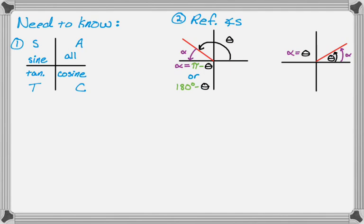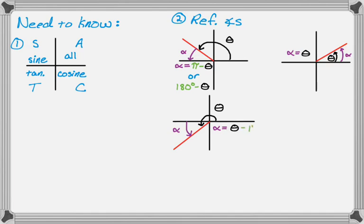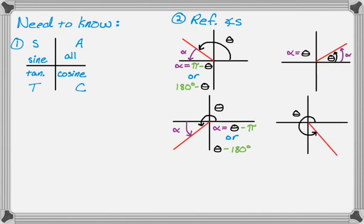In the third quadrant, theta goes all the way from the positive x-axis, and the reference angle alpha is calculated as theta minus pi, or theta minus 180 degrees. In the fourth quadrant, alpha is calculated as 2 pi minus theta, or 360 degrees minus theta.